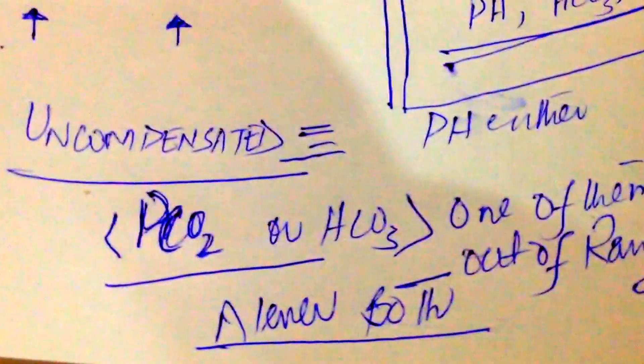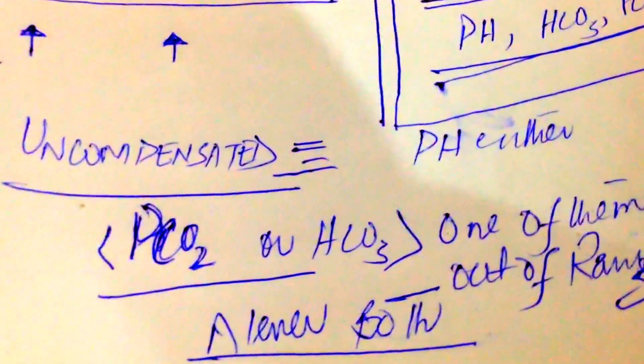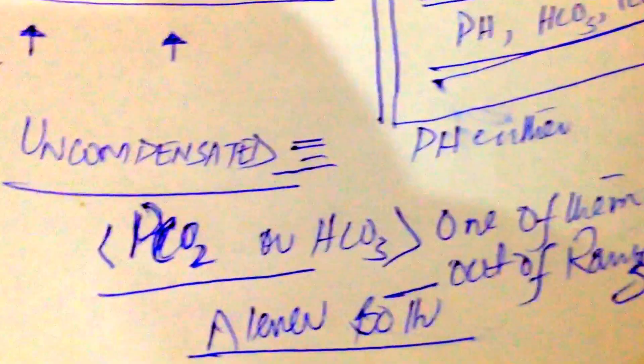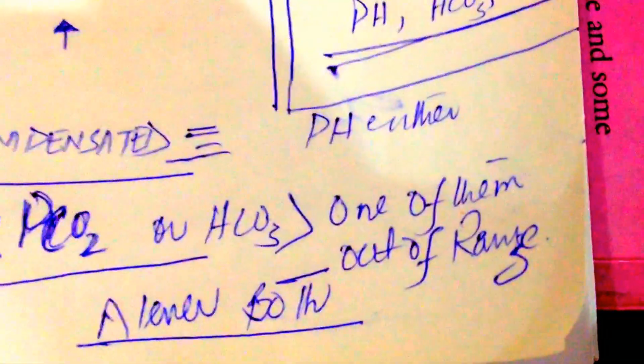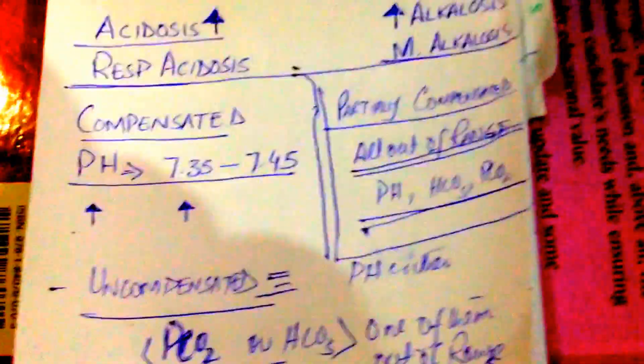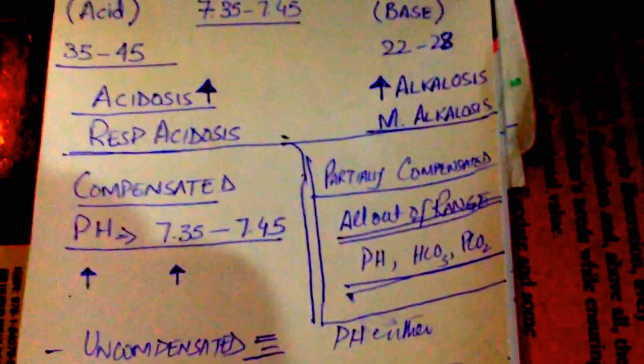In uncompensated, along with pH, only one component is deranged. Either PCO2 or HCO3 will be normal and the other will be out of range. I hope you have understood the basics of ABGs.